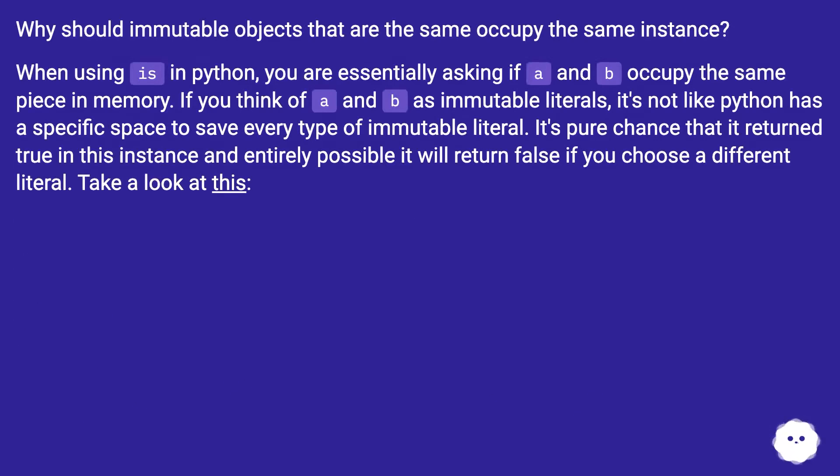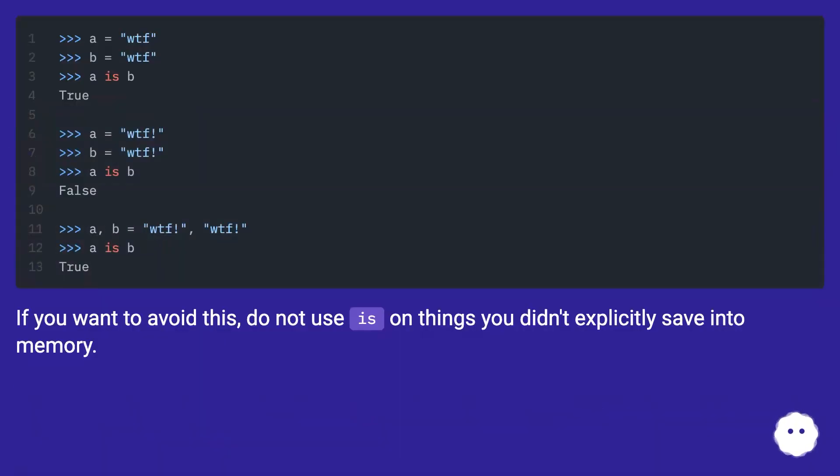Why should immutable objects that are the same occupy the same instance? When using 'is' in Python, you are essentially asking if A and B occupy the same piece in memory. If you think of A and B as immutable literals, it's not like Python has a specific space to save every type of immutable literal. It's pure chance that it returned True in this instance and entirely possible it will return False if you choose a different literal. Take a look at this. If you want to avoid this, do not use 'is' on things you didn't explicitly save into memory.